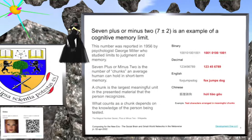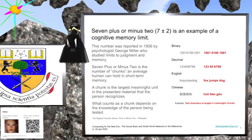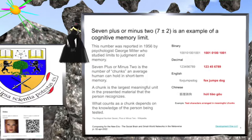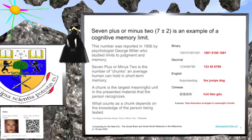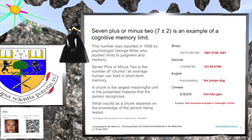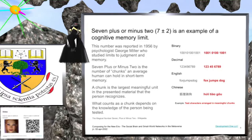What counts as a chunk depends on the knowledge of the person being tested. For non-English speakers who see the string F-O-X-J-U-M-P-S-D-O-G, it makes no sense, whereas most English speakers will automatically group it into three chunks: fox, jumps, dog. For non-Chinese speakers who see the string hu li tiao gu, it makes no sense, whereas most Chinese speakers will automatically group it into three chunks: fox, jumps, dog.